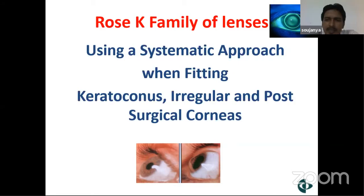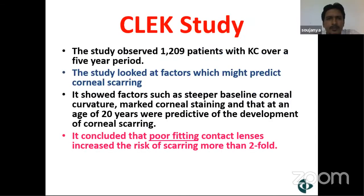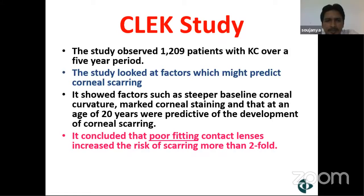Since previous lectures have covered scleral lenses, which are also used for keratoconus or irregular and post-surgical corneas, Rose K is also in that category. Let us first talk about the CLEC study. This study observed around 1,200 patients with keratoconus over a five-year period, looking at factors that might predict corneal scarring. It found that steepest baseline corneal curvatures, marked corneal staining, and age of 20 years were predictive of scarring. Most importantly, it concluded that poorly fitting contact lenses increase the risk of scarring more than two-fold.